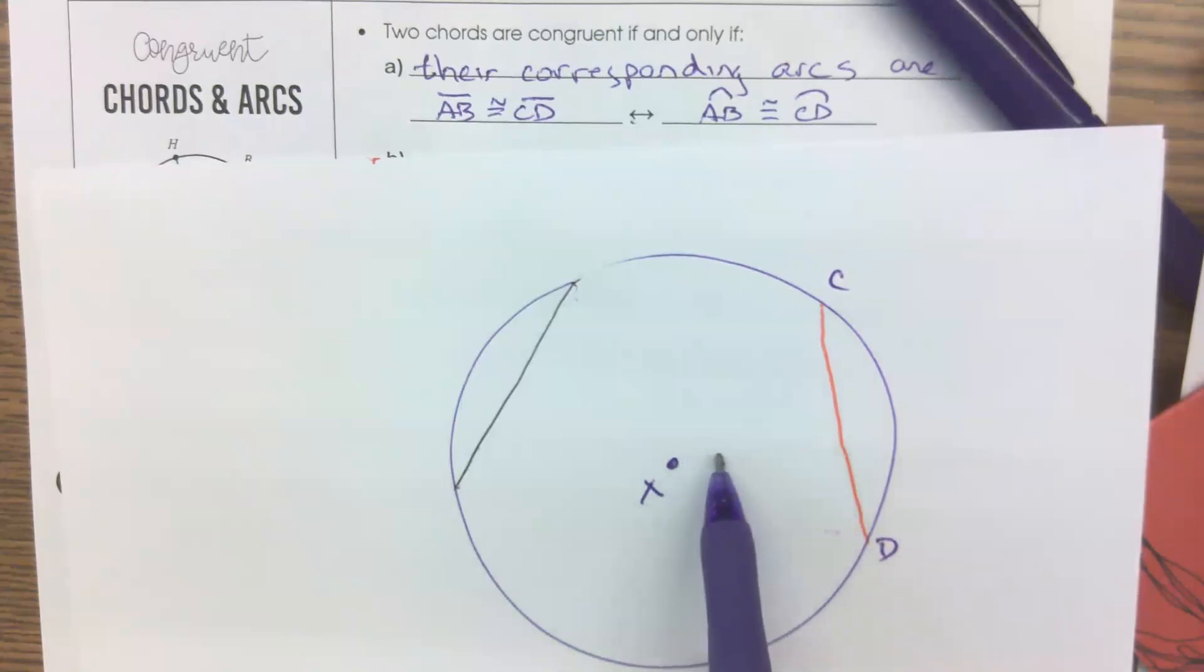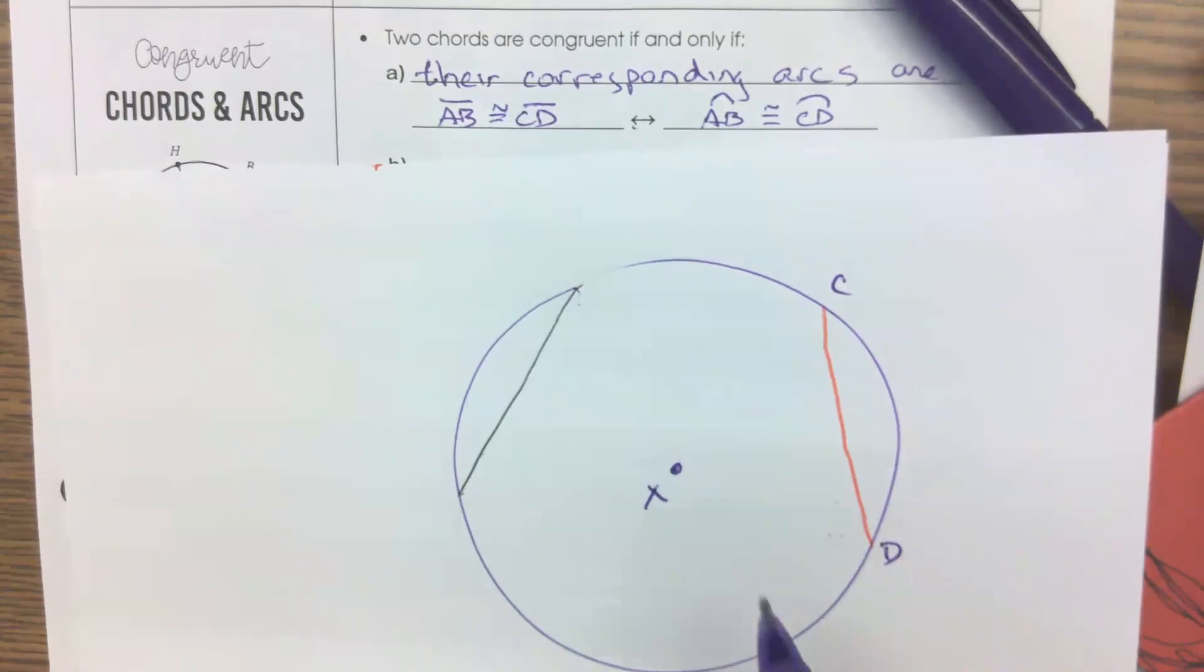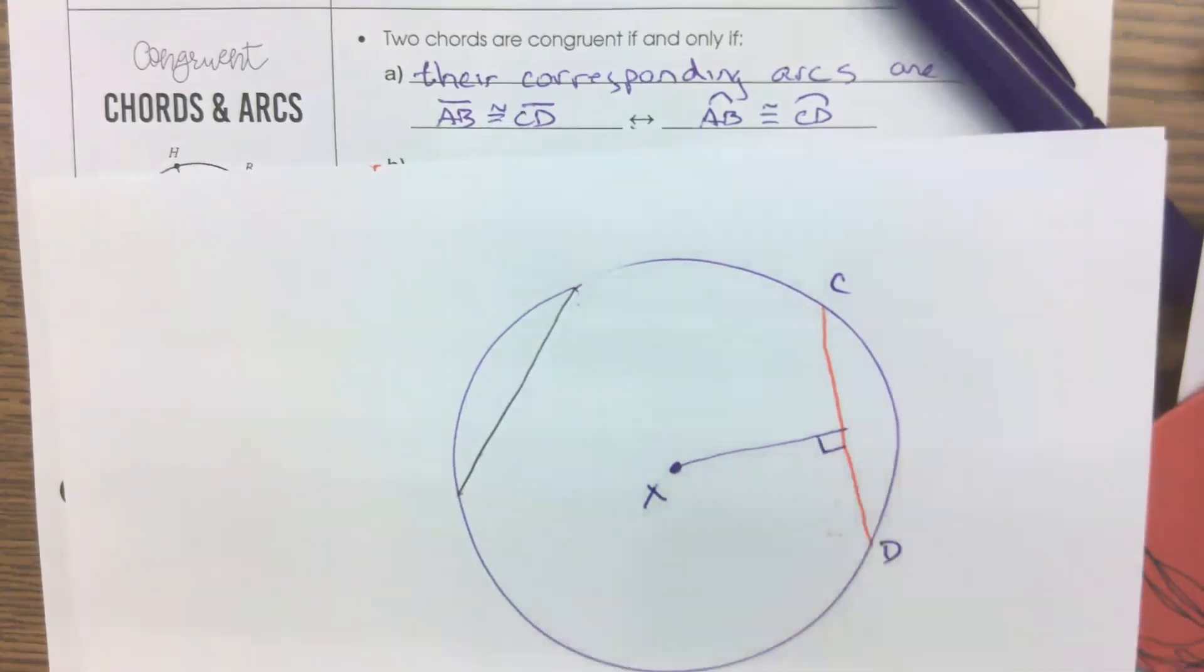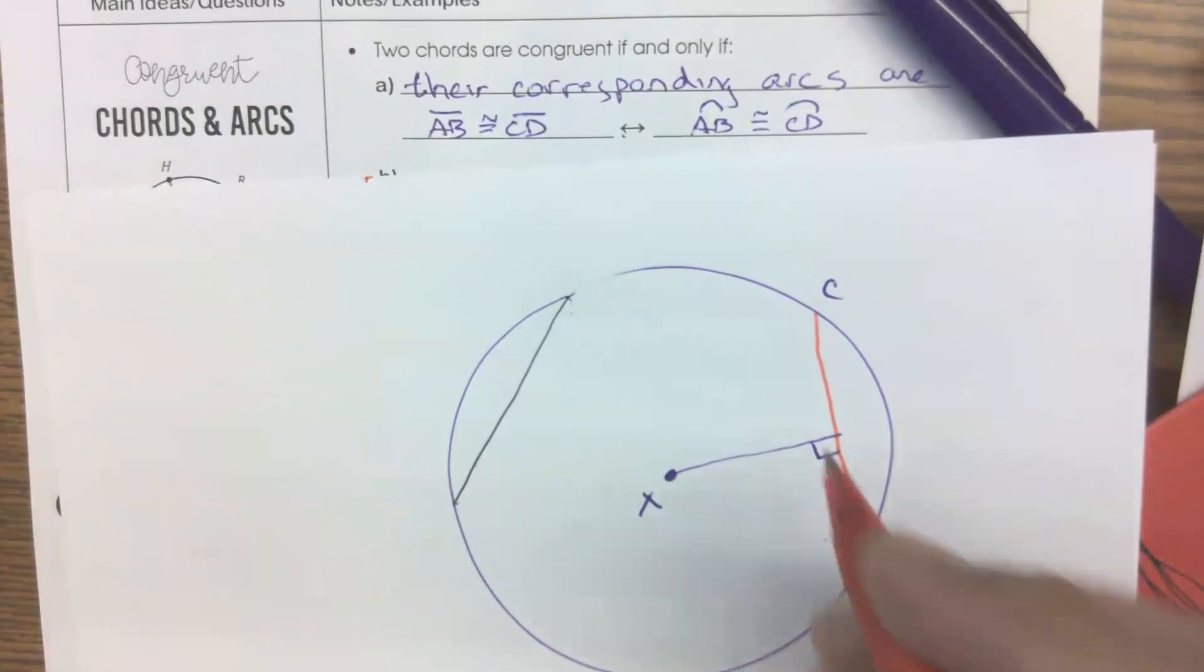Would you say this point is the distance away from this segment that's equivalent to X to D? Or is that further? Yeah. When we talk about distance, what we talk about is the shortest distance. So we'd take a perpendicular segment, a part of a radius that goes there. And what can we say about this?